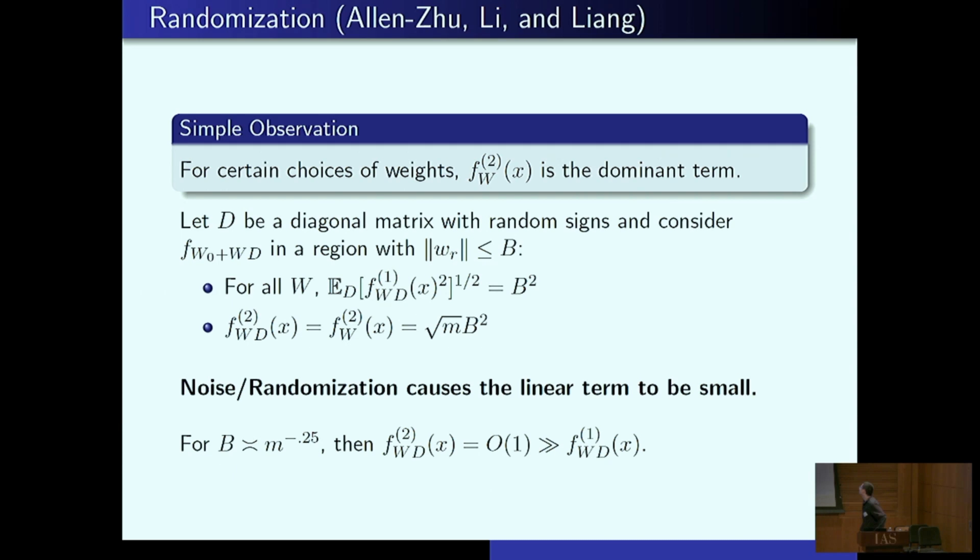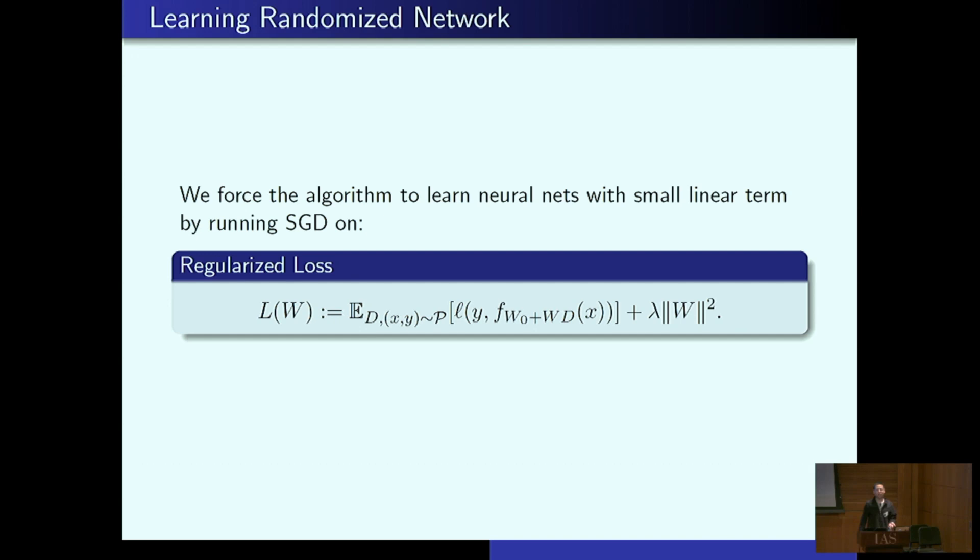Okay, so the noise and randomization can cause the linear term to be small. In fact, so now you can optimize out to a radius of m to the minus one quarter. So in NTK, the usual scaling as a neuron moves one over square root m. For most of this talk, I'll be talking about one over m to one quarter, so slightly larger than how the weights move in NTK. Okay, in this regime, the second order term can predict an order one quantity and it's larger than the linear term. Okay, so we force the algorithm to learn neural nets where the linear term is essentially negligible by doing SGD on a modified loss and with a regularizer. The purpose of the modifying loss, like I said, is to sort of dampen out the linear term. The purpose of the regularizer is to make me not move more than m to the minus one quarter.